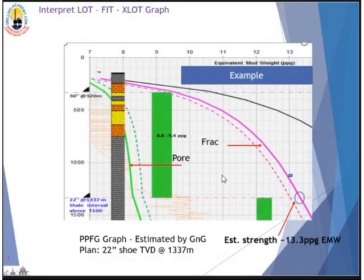Let's kick off with this example of working out the shoe strength of a 22-inch casing shoe. Look at this graph — this is a classic PPFG graph, a pore pressure fracture gradient graph. This is familiar territory for drilling engineers, supervisors, and superintendents in the D&C department. There is a lot of information here; let's pay attention to what is necessary for this session, which is the pink line.